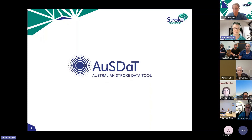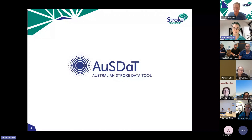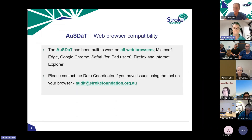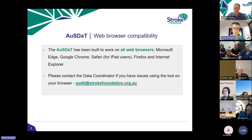The tool we use for the audit is AUSDAT — the Australian Stroke Data Tool. It has the highest level of security available, housed on a server with internationally recognised standards for information security management best practices. It's built to work on any web browser, so it doesn't matter what your site uses. If you do have any browser problems, let me know.